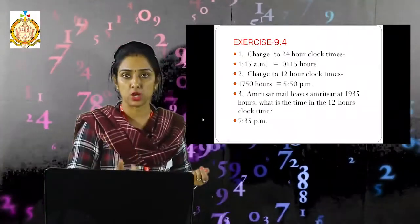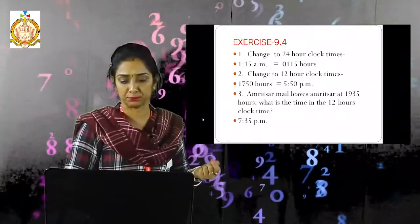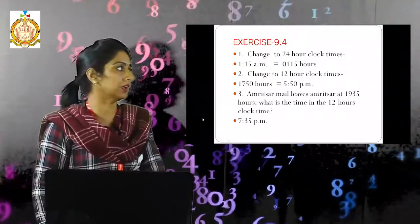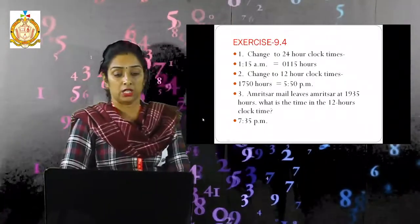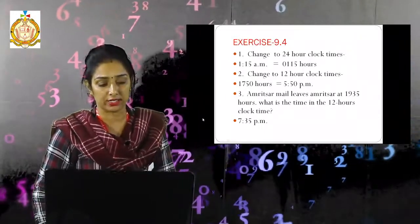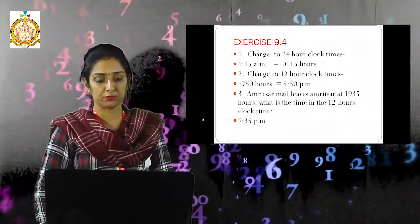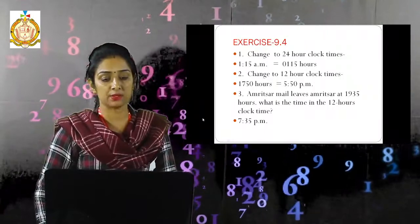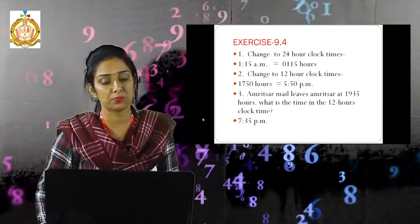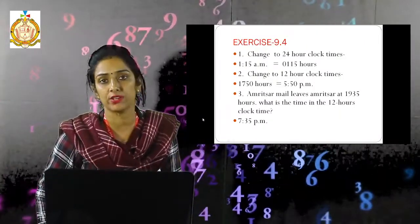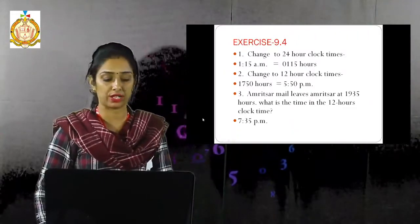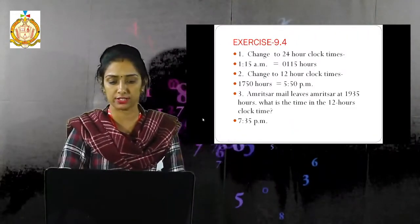Third question: Amnes mail leaves at 19:35 hours. What is the twelve-hour clock time? Again subtract 12:00 from 19:35 and you get 7:35 PM.